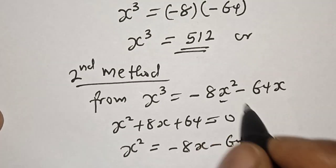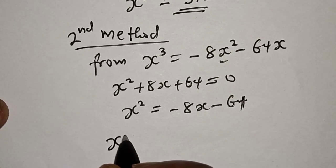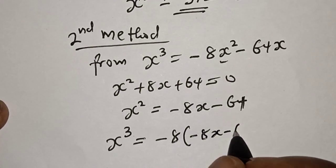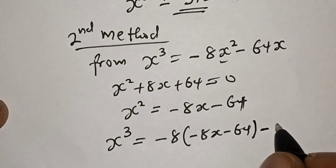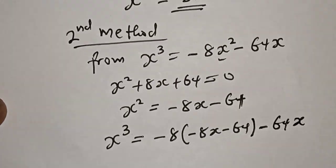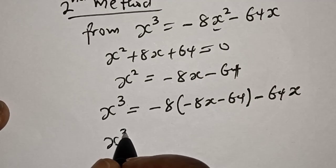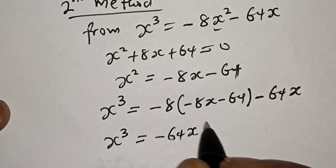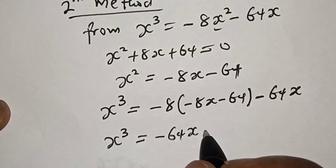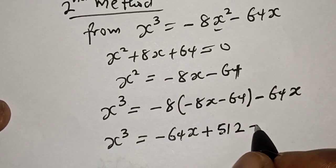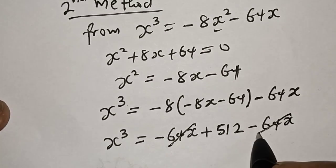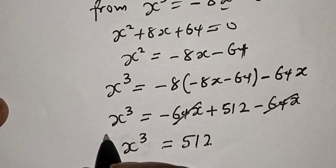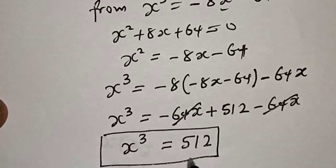Now let's substitute for s²: s³ = −8 times (−8x − 64) − 64x. Then s³ = (−8)(−8x) + (−8)(−64) − 64x = 64x + 512 − 64x. The 64x terms cancel, so s³ = 512. That is our final answer.